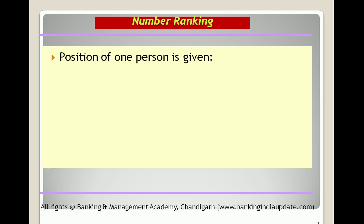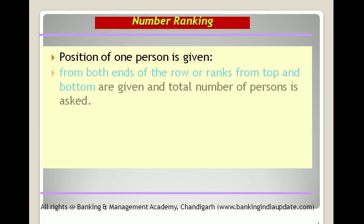Today we will discuss number ranking. In such questions, the position of one person is given from both ends of the row — ranks from top and bottom are given — and we are asked to find the total number of persons in the row. In some questions, the total number of persons and rank from one side are given, and we must find the rank from the other side.